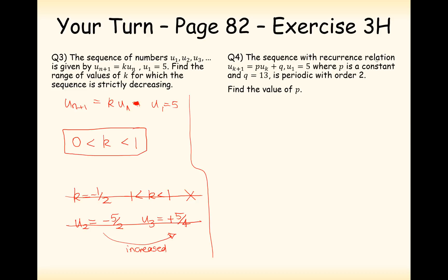Question 4. The sequence with recurrence relation u_{k+1} equals p times u_k plus q, where u_1 is equal to 5, and q is equal to 13, is periodic with order 2. Find the value of p. So what we want to do then is, if it has a period of 2, then it's going to go to 5, different number, back to 5, different number, back to 5, different number. So we want to set u_3 equal to 5 as well. So this here is the key for the question.